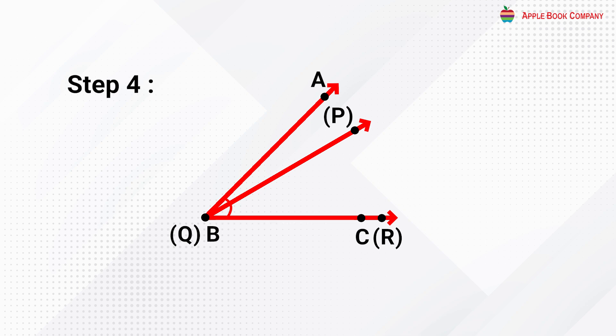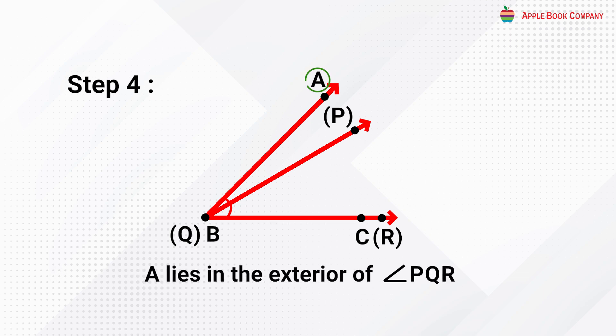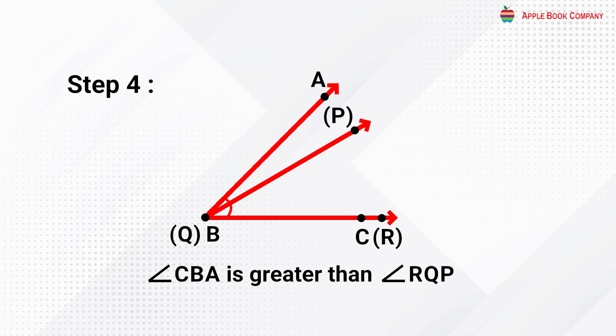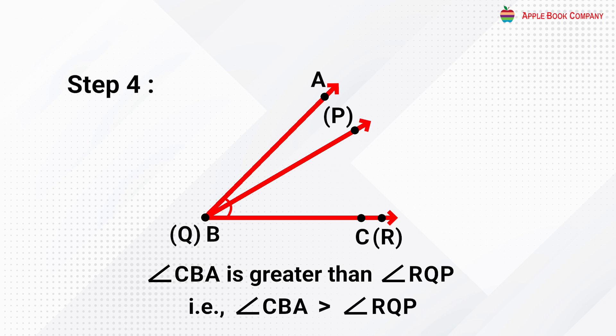Step 4: A lies in the exterior of angle RQP. Clearly, angle CBA is greater than angle RQP. That is, angle ABC is greater than angle PQR.